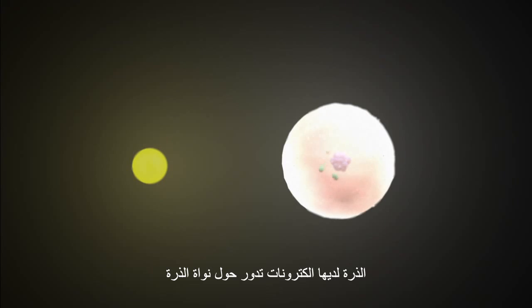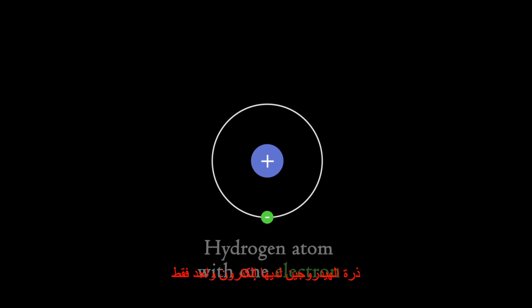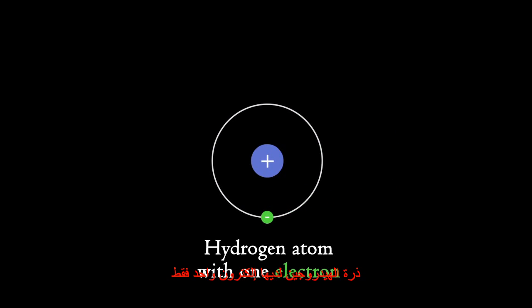The atom has electrons orbiting the atom's nucleus. For better understanding, the Bohr model of the hydrogen atom will be used. The hydrogen atom has only one electron. The atom and the electron are on the ground state, namely E0.